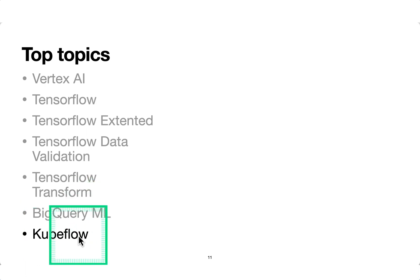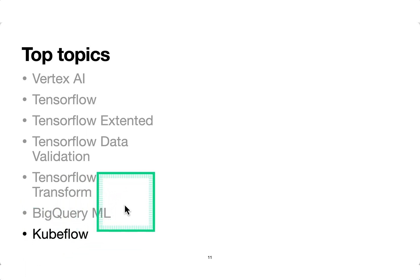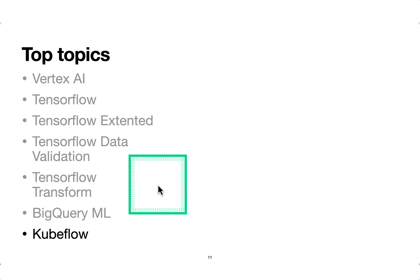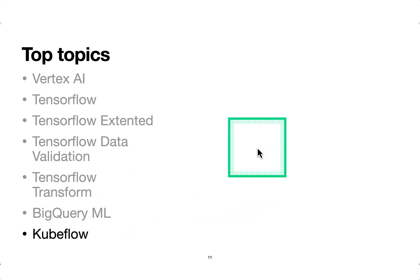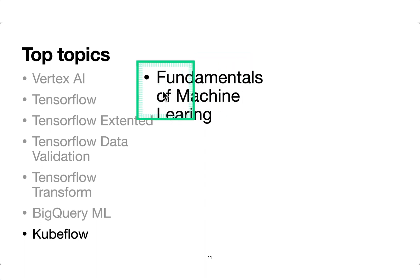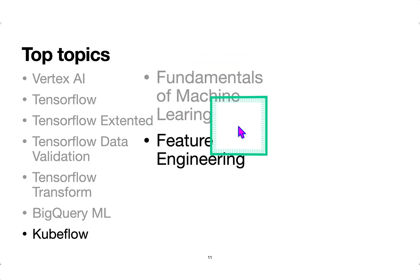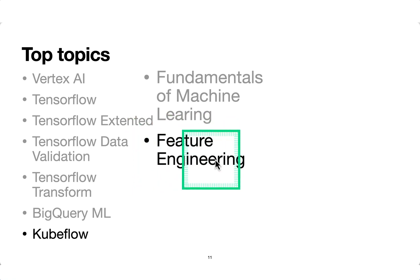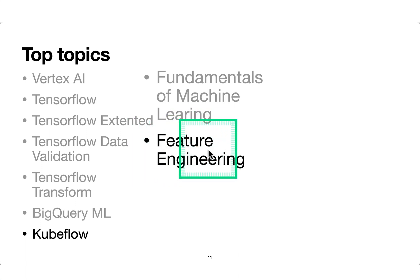Kubeflow allows you to run your machine learning jobs on Kubernetes or on-prem. Nowadays we don't use virtual machines for machine learning needs — it's all on Kubernetes. Be very comfortable with fundamentals of machine learning. Feature engineering is big in the exam — make sure you understand all aspects like feature crosses, bucketizing, hashing, one-hot encoding, dummy encoding, and hash encoding.